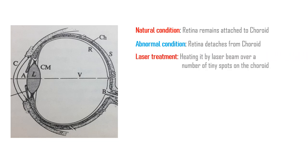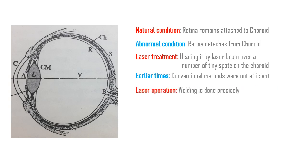The retina is reattached to the choroid by hitting it over a number of tiny spots, as if it's a welding. Though the task was being done earlier also by conventional methods, it used to be extremely difficult and was not always successful. After the advent of laser, because of the precision in controlling the operation, it became highly efficient surgery in welding the retina to the choroid.